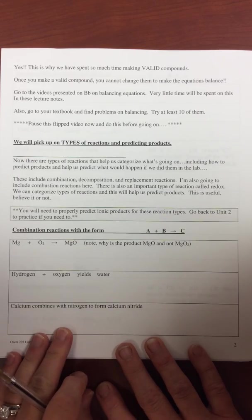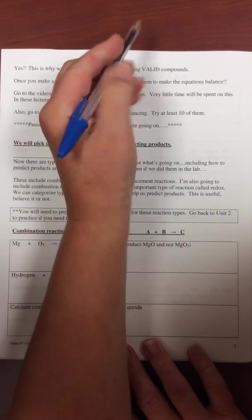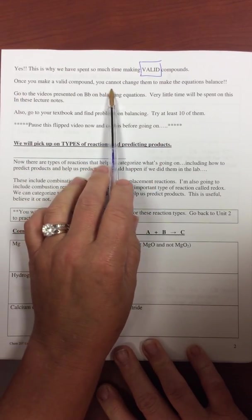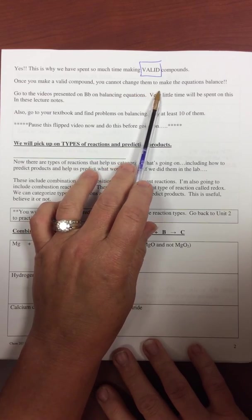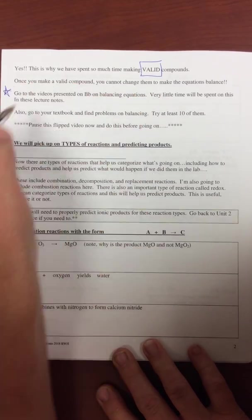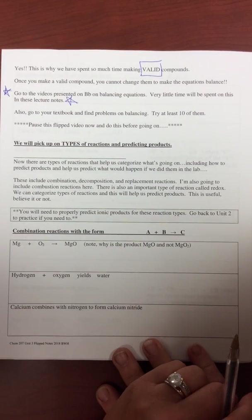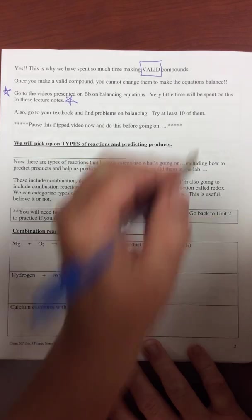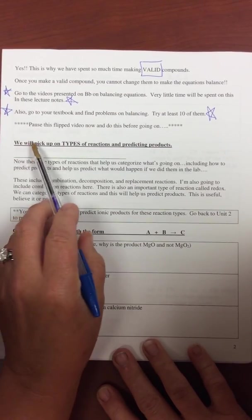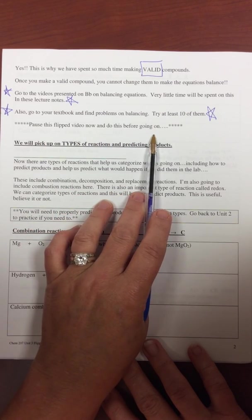Okay, so again, top of page two. This is why we spent so much time making valid compounds. Once you make valid compounds, you cannot change them. Again, go to these videos. Very little time will be spent in your lecture notes. Go to your textbook and find problems. I put those on Blackboard for you. Again, pause the video and do this before going on.